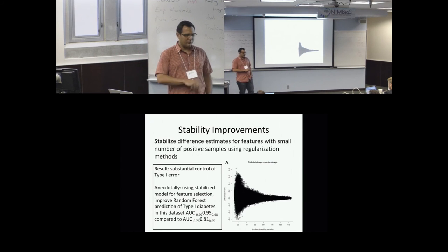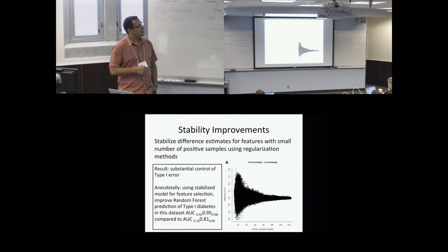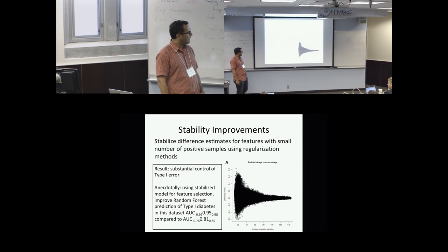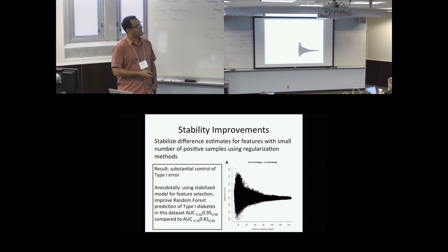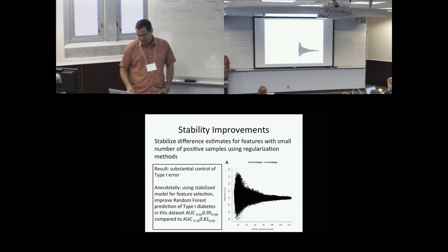Something that we also did recently, and it's part of MetagenomeSeq2, is we're starting to use regularization methods to stabilize our estimates. We find that our estimates are rather unstable, depending on the number of positive samples. So we have shrinkage to control or stabilize our estimates when you have a small number of positive samples in the feature. If you have high number of positive samples in the feature, we don't do anything. The smaller number of features that we do, we tend to control the size of those differences. And anecdotally, suppose we use our method as feature selection. We can improve a random forest prediction of type 2 diabetes on this dataset to an AUC of 95 compared to an AUC of 81, as published in that paper.